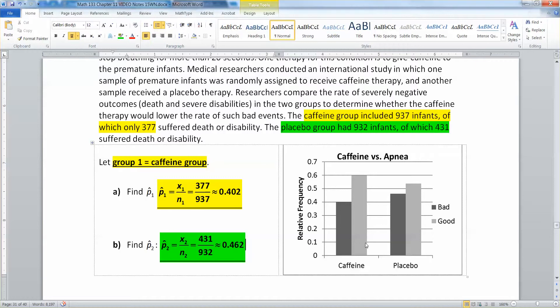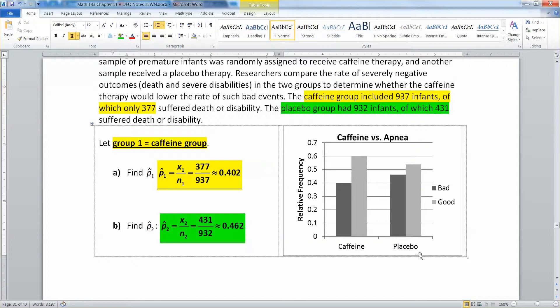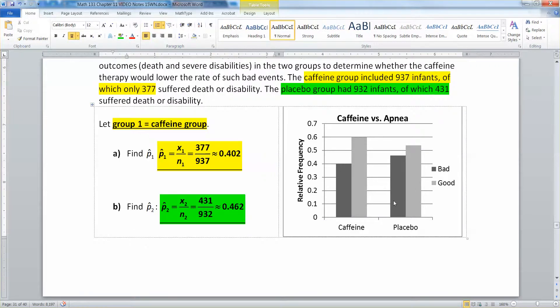You can see in this graph the comparison here. Here's the caffeine group over here on the left, and you can see that 40% of the premature babies had a bad outcome, where 60% of them did not. In the placebo group, the difference appears to be much less pronounced. Those that were given the placebo, the bad outcome was 46%, and the good outcome is a little bit over 50%. So it seems like caffeine is doing something, but we're going to have to prove it.